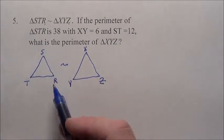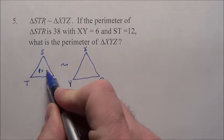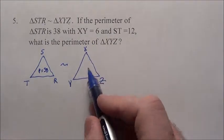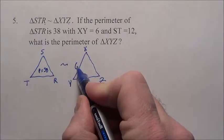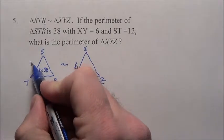If the perimeter of STR, so the distance around that guy, put it inside here, is 38, and XY, well here's XY is 6, so I'll make that mark, and remember this XY corresponds to that ST side, well look, it says ST is 12.